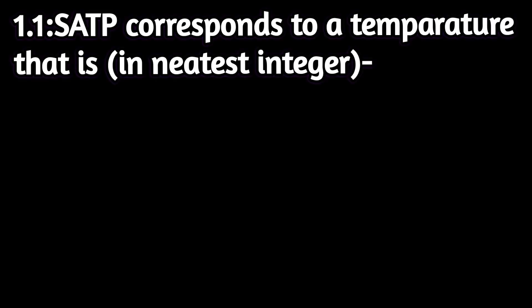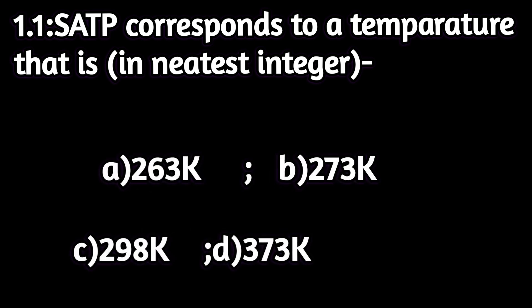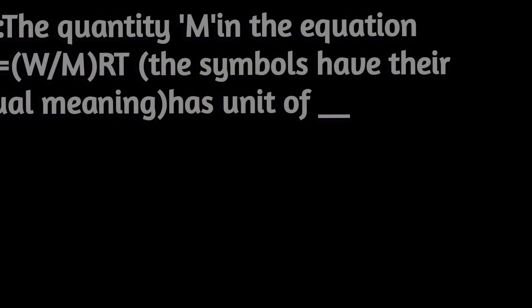Now let's move to the solution of this activity task. First question: choose the correct answer. Q1.1 — SATP corresponds to a temperature that is, to the nearest integer: option A 263K, option B 273K, option C 290K, or option D 373K. The answer of 1.1 is option B, 273K.